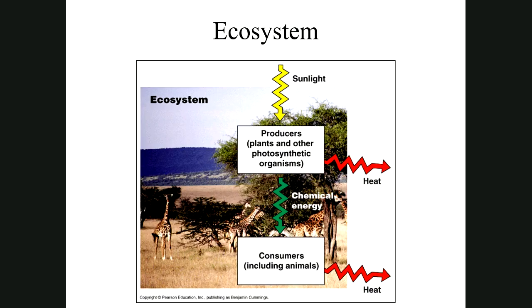Here's an example of an ecosystem. Sunlight is the energy source for photosynthesis in this plant. The plant grows leaves; giraffes feed on those leaves, getting chemical energy, giving off heat, repairing and building their bodies, and producing waste materials returned to the soil by decomposers and reused by the plants. So energy resources are being recycled in this picture.